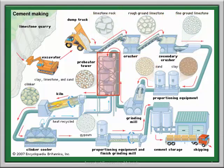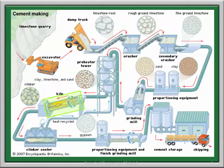This is the preheater tower where the raw materials are subjected to heat. Then this is the rotary kiln where the raw materials are heated up to 1750 degree Celsius. One of the most important things about the rotary kiln is the long flame produced at the bottom of it. The kiln is slightly inclined in position. We will study the rotary kiln in detail later.